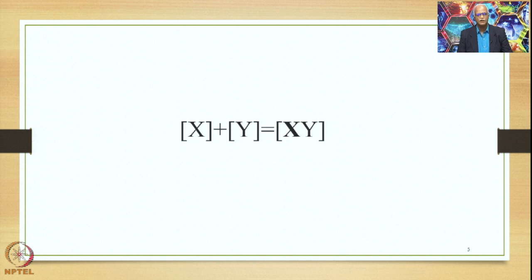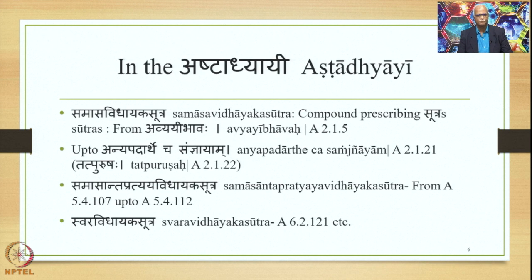Semantically also, if X,Y is to be related to any other meaning in the sentence, it has to be through X and can never be through Y. These are the features of the Avyaibhava Samasa. Some of them are quite general — like Aikarthya, Aikapadya, and Aikaswarya — applicable to all Samasas. But Puruva Padartha Pradhanya and Puruva Padha Pradhanya are the specific features of the Avyaibhava Samasa.